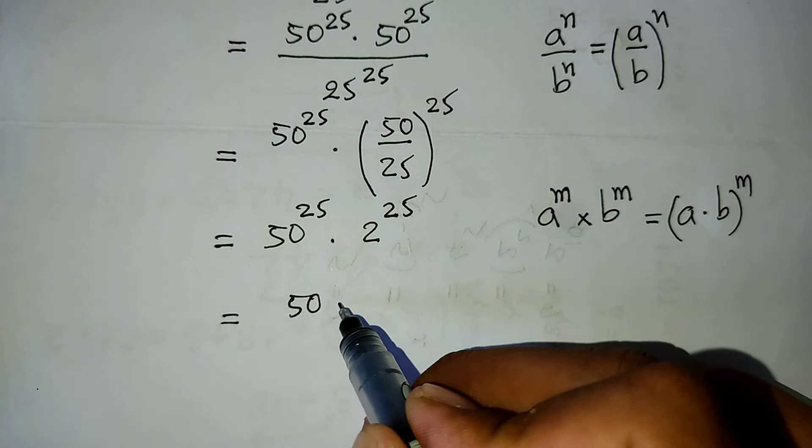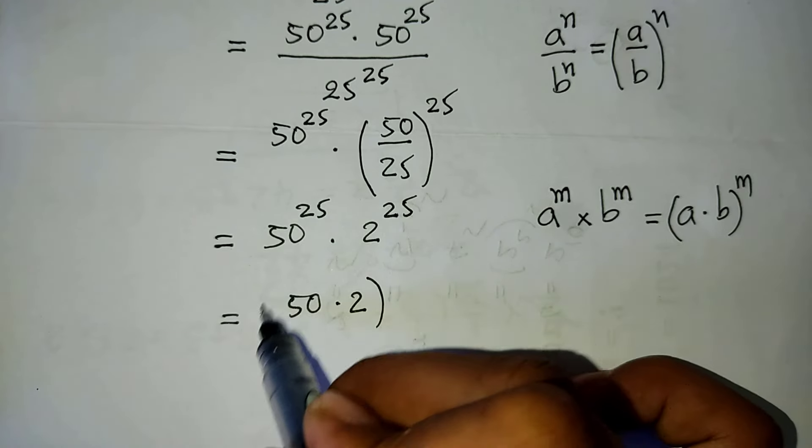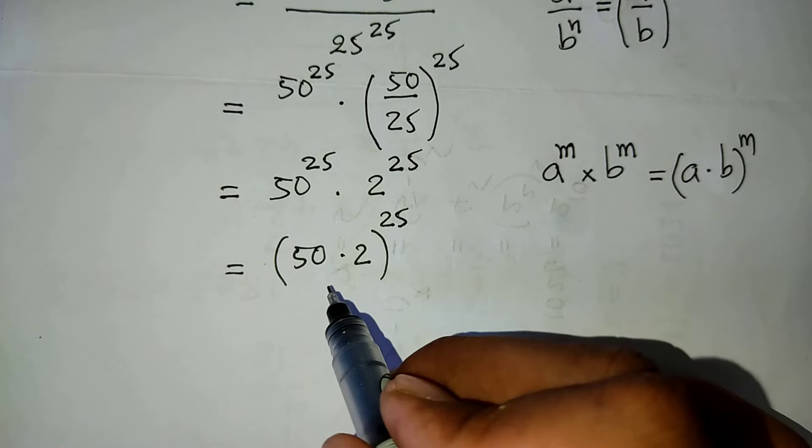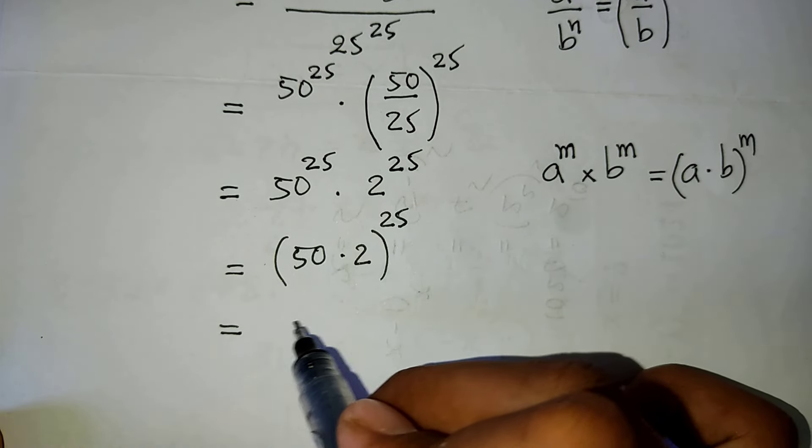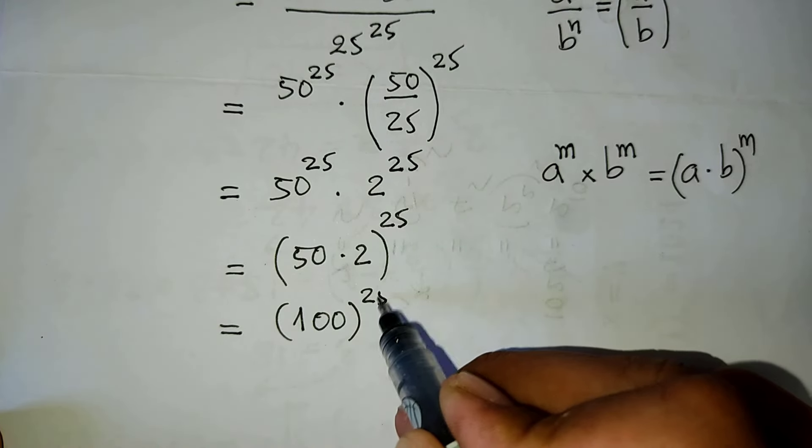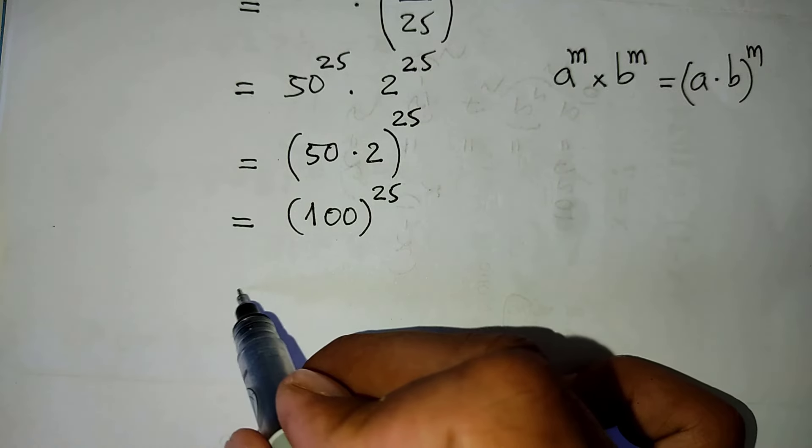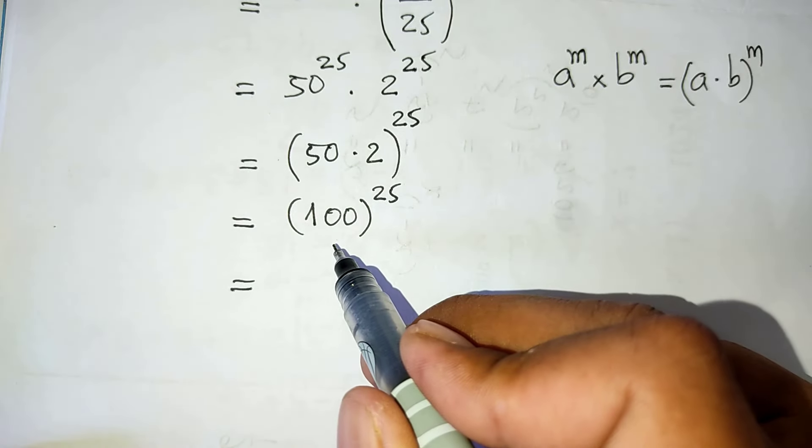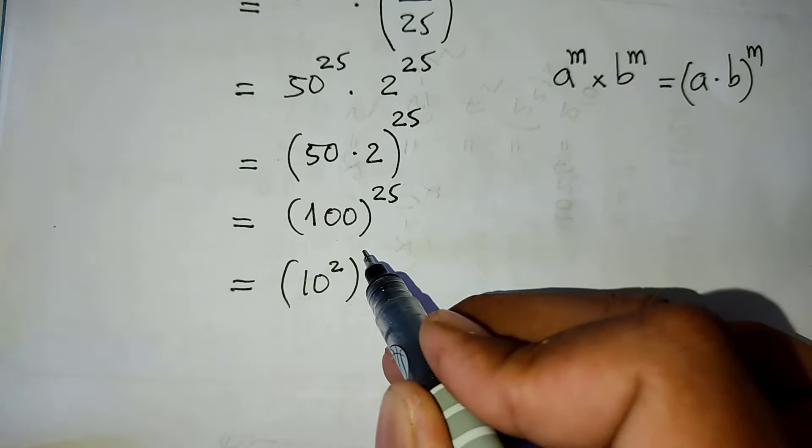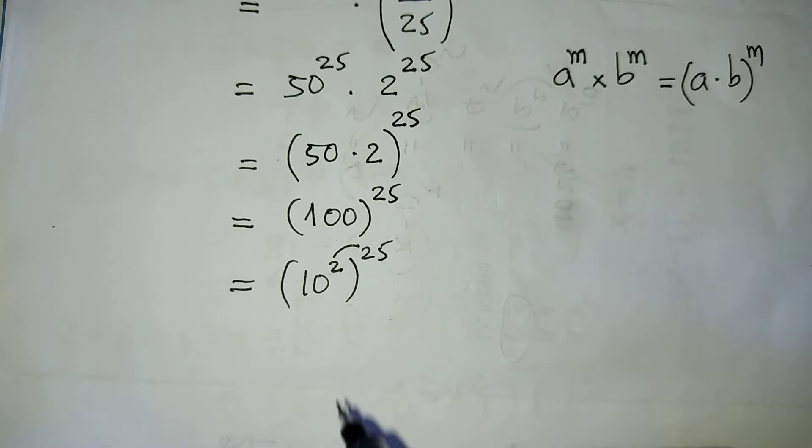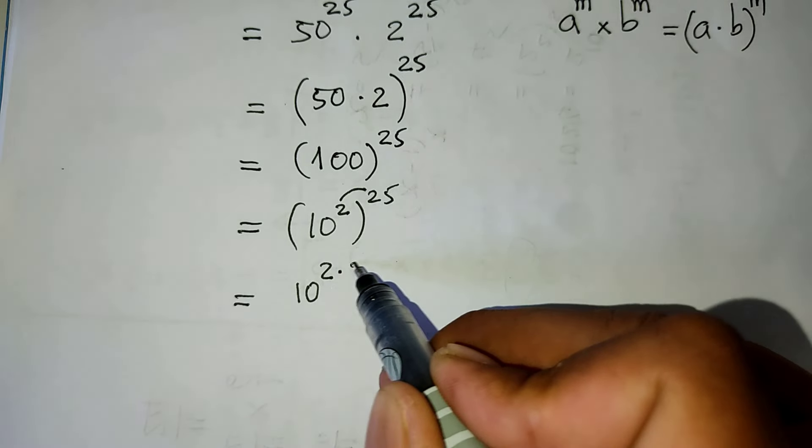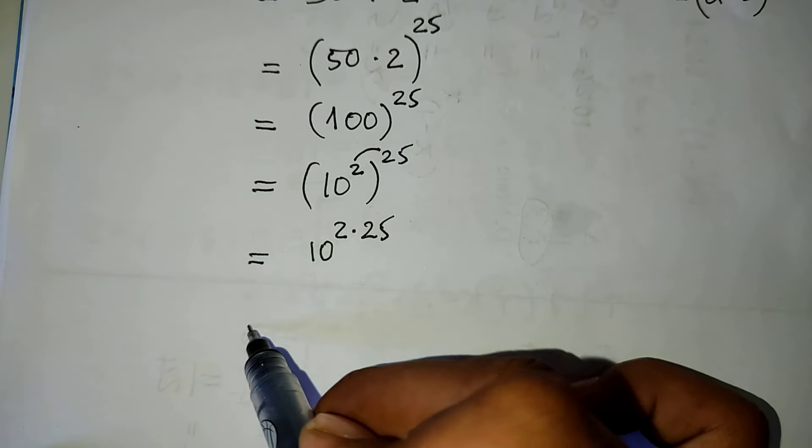And it is equal to 100 to the power of 25. 100 we can write it as 10 squared to the power of 25. When we multiply this, we get 10 to the power of 2 times 25.